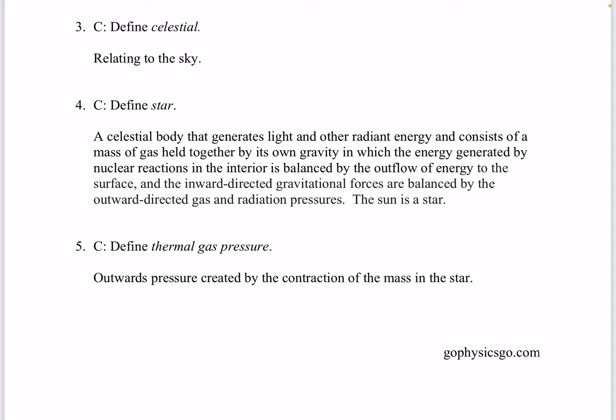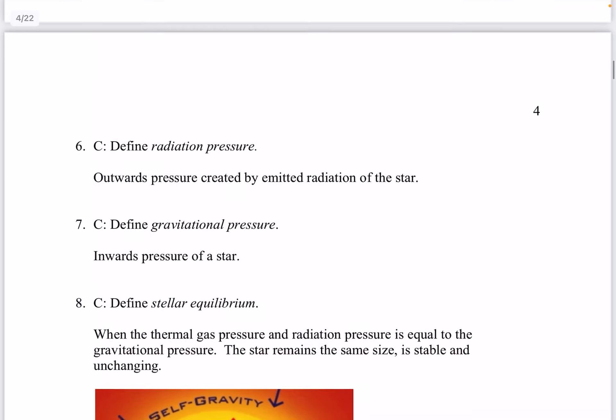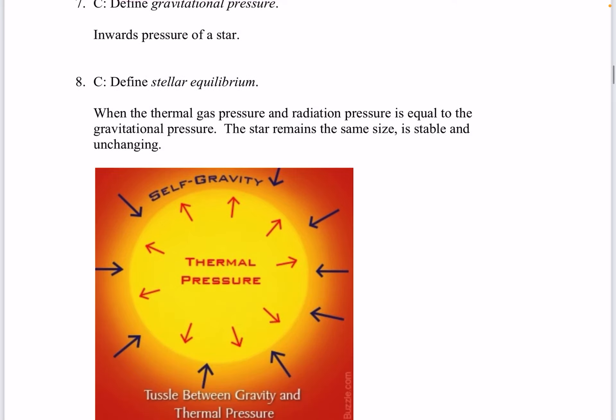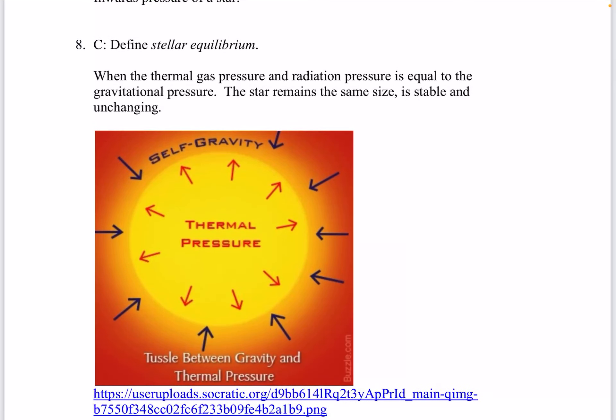Question 5. Define thermal gas pressure. This is the outwards pressure created by the contraction of the mass in the star. Question 6. Define radiation pressure. This is the outwards pressure created by emitted radiation of the star. Question 7. Define gravitational pressure. This is the inwards pressure of the star. Question 8. Define stellar equilibrium. When the thermal gas pressure and radiation pressure is equal to the gravitational pressure. The star remains the same size as stable and unchanging. So the pressure out equals the pressure in.